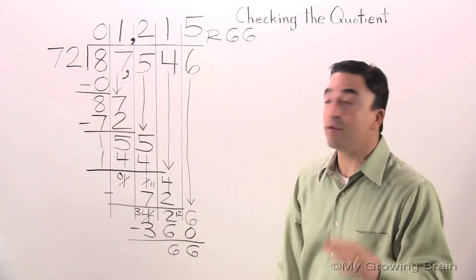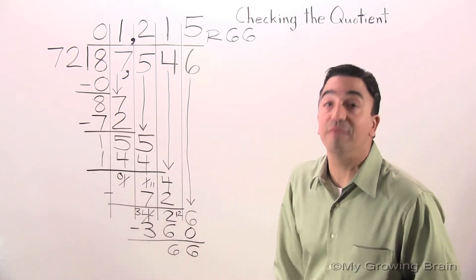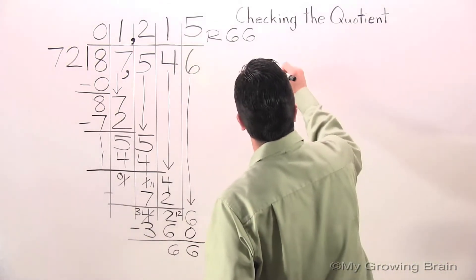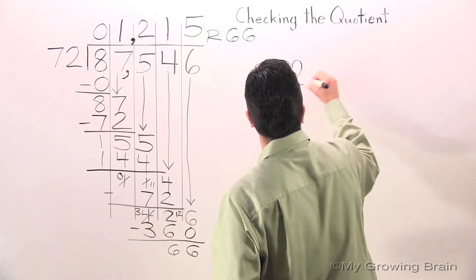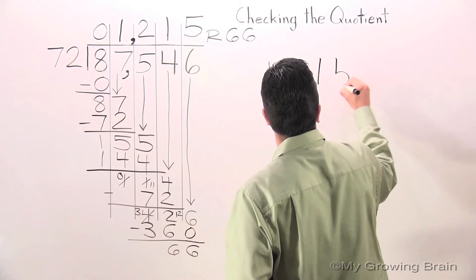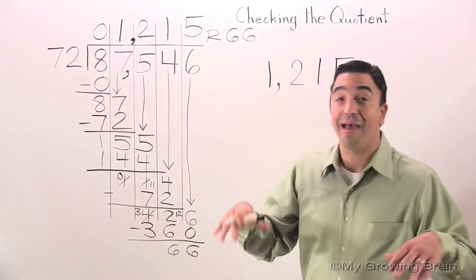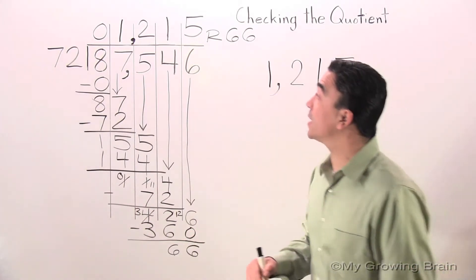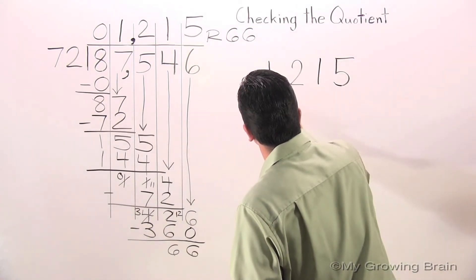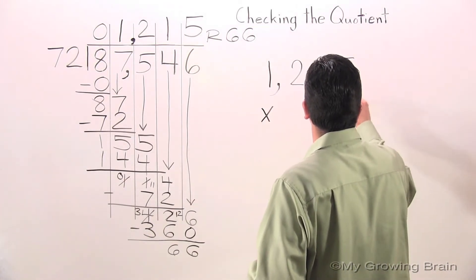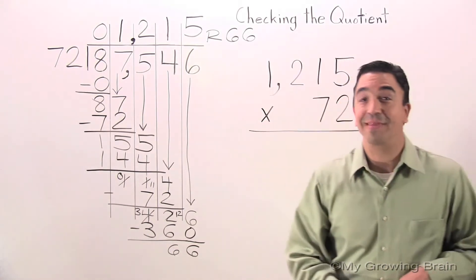The first thing I'm going to do is write down the quotient, 1,215. And now I'm going to multiply it by the divisor, 72.